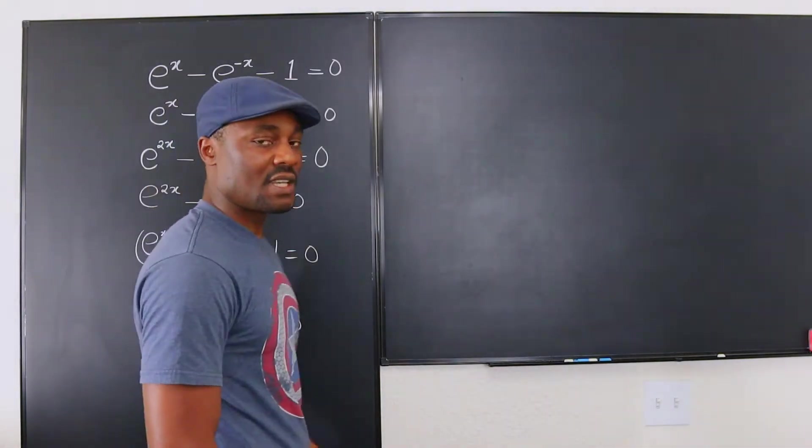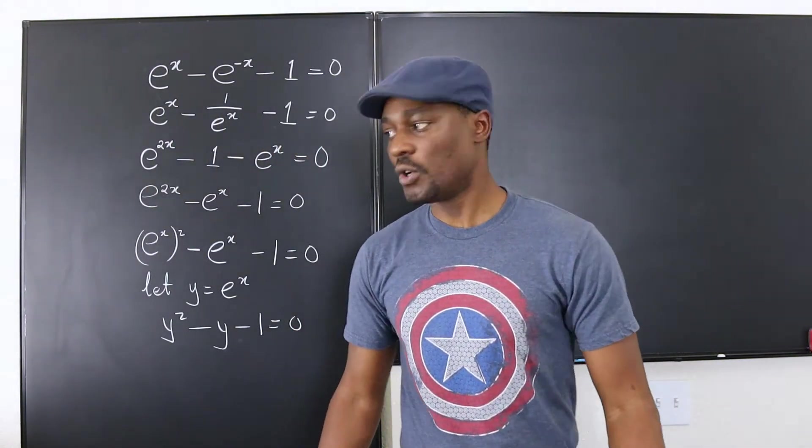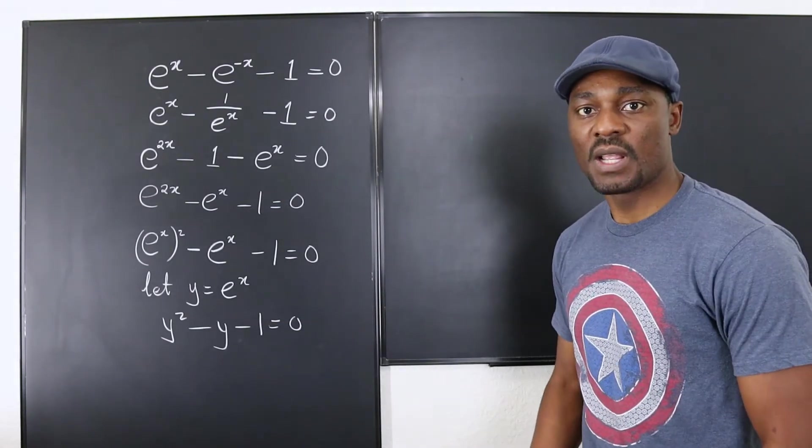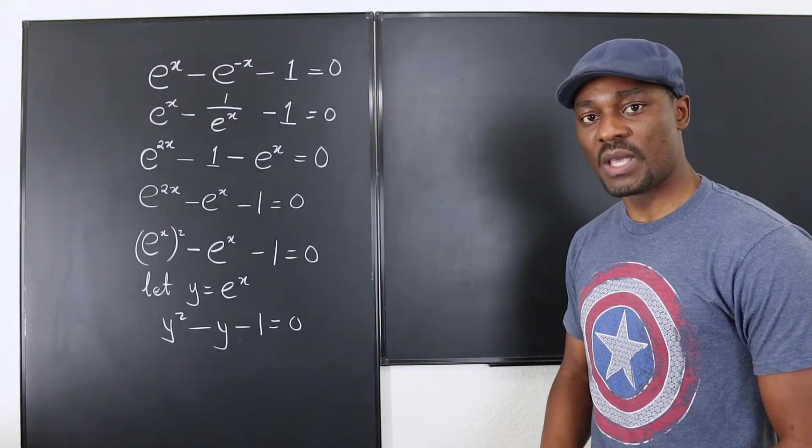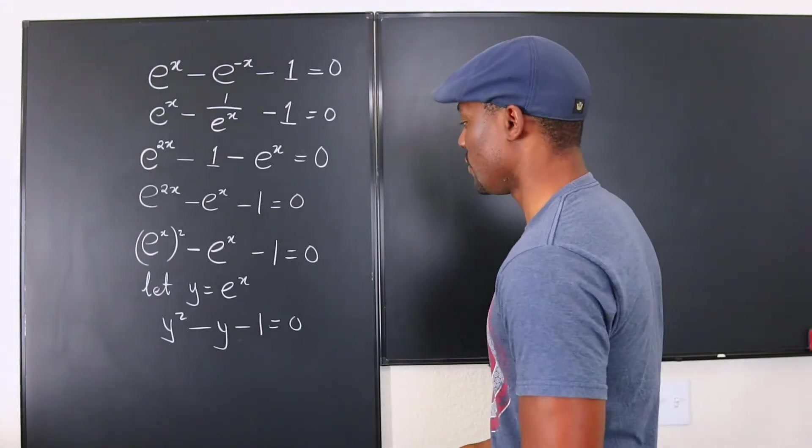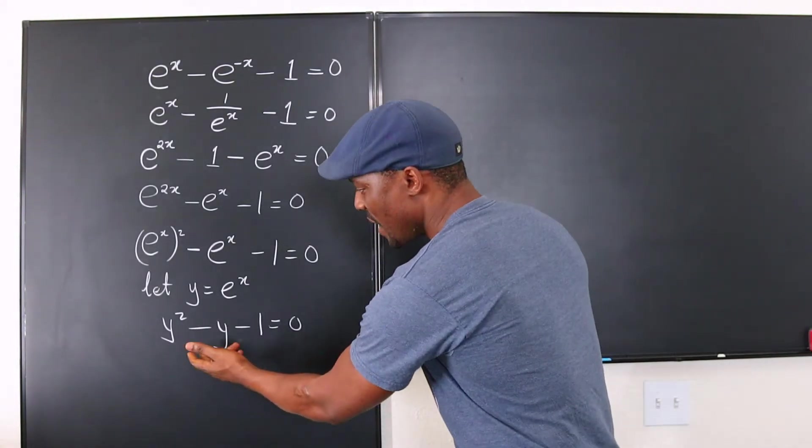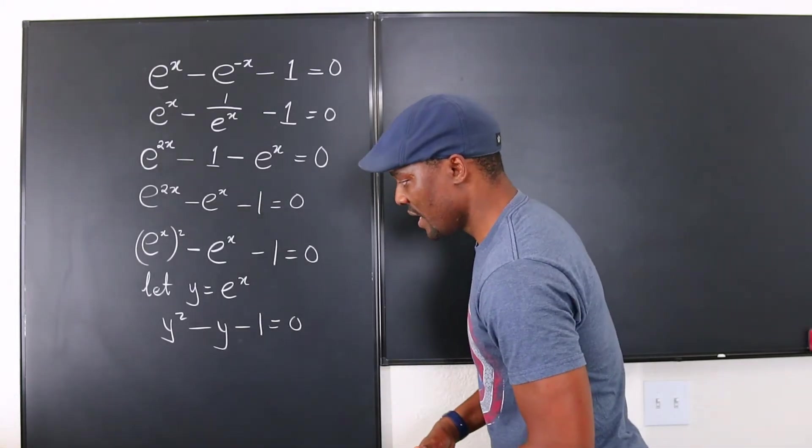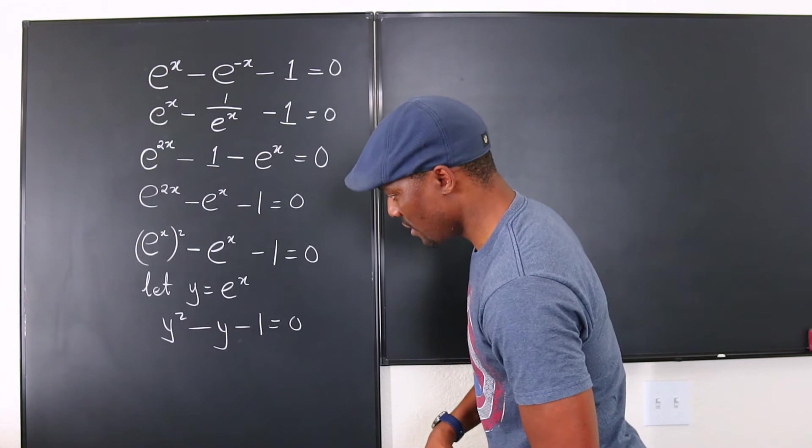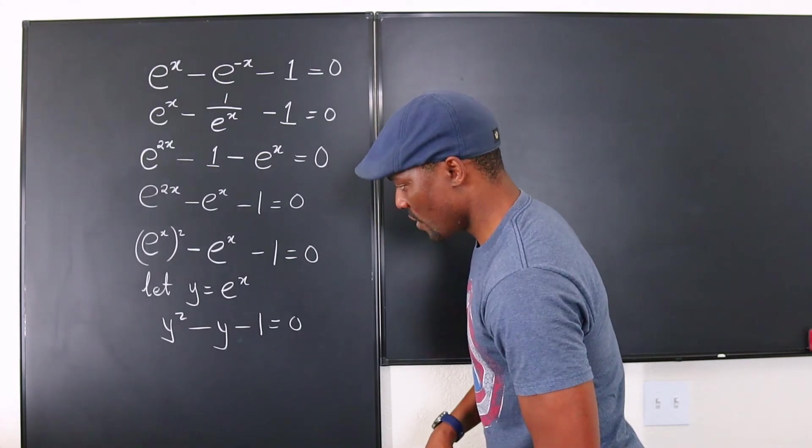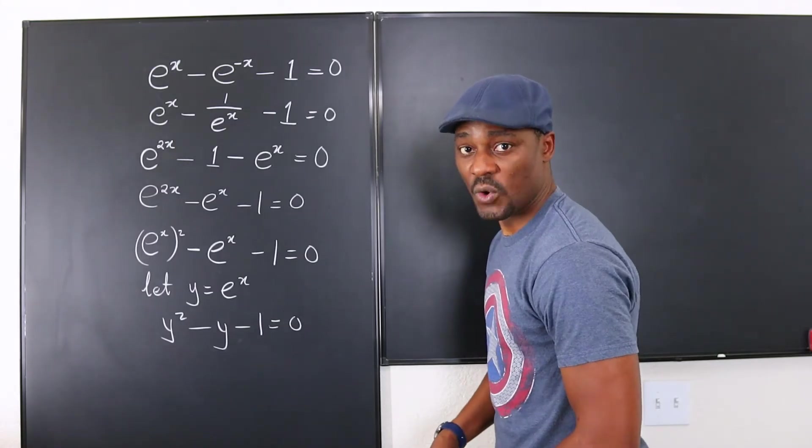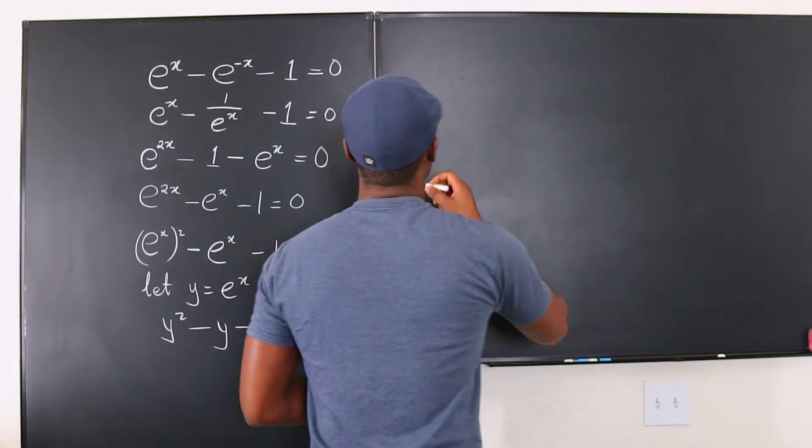So this is a quadratic equation that we can all solve. So if you solve this whatever answer you get for y, you can come back here and substitute and you'll be fine. You know what x will be. So let's see. Let's see what that looks like. So the way this is, it does not appear that we can factor. Can we factor? No. We're going to get irrational numbers. So let's just use the quadratic formula.